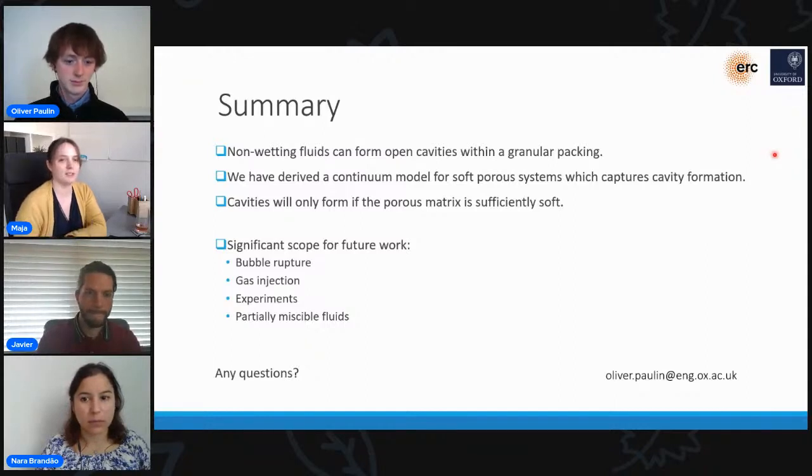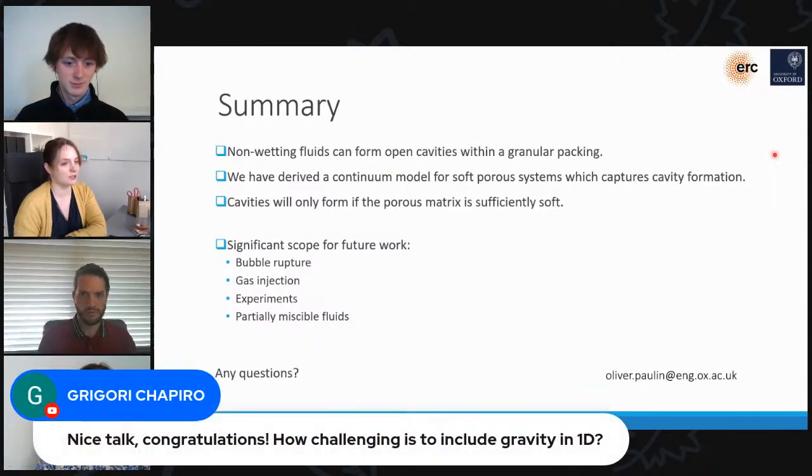I see a question from the audience, from Grigori Shapiro. Nice talk. Congratulations. How challenging is it to include gravity in 1D? Yes, that's a good question as well. So, obviously, I've neglected gravity in the simulations. We're just sort of going for simplicity in the first case. I think the main way gravity will come in will be in the momentum balance with a gravitational term. I don't think, again, I don't think it'll be too challenging. Although, I've kind of assumed that all the phases are index matched here. So, it wouldn't really do anything in this situation. But, yeah, I think that's, again, something we want to look at going forwards, which hopefully we can put in. Thanks.